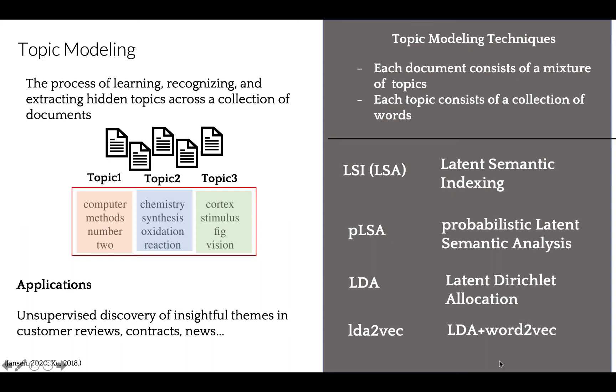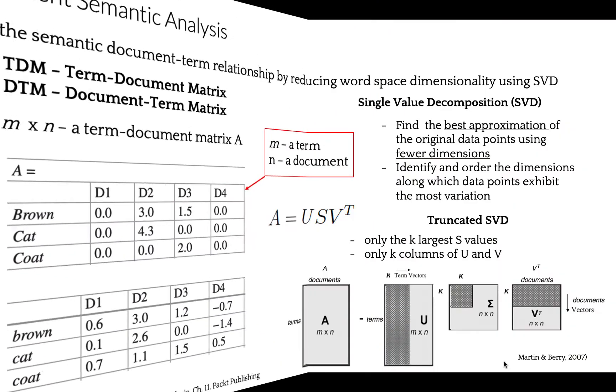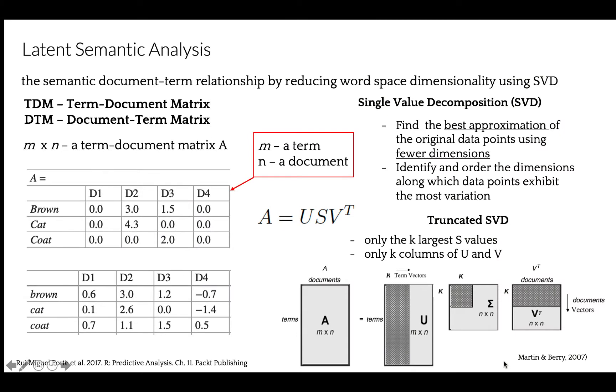There are several models that perform topic modeling: Latent Semantic Indexing, Probabilistic Latent Semantic Analysis, Latent Dirichlet Allocation, and a new model LDA plus Word2Vec combined. Let's start with Latent Semantic Indexing, LSI, also called Latent Semantic Analysis, LSA. It is one of the foundational techniques in topic modeling. It captures the semantic document-term relationship by reducing dimensionality of the word space, and it does it by matrix decomposition.